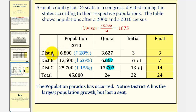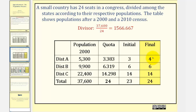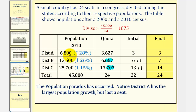Notice how district A had the largest percent growth. But in the year 2000, district A had 4 seats, while in 2010 district A only receives 3 seats. This is an example of the population paradox. I hope you found this helpful.